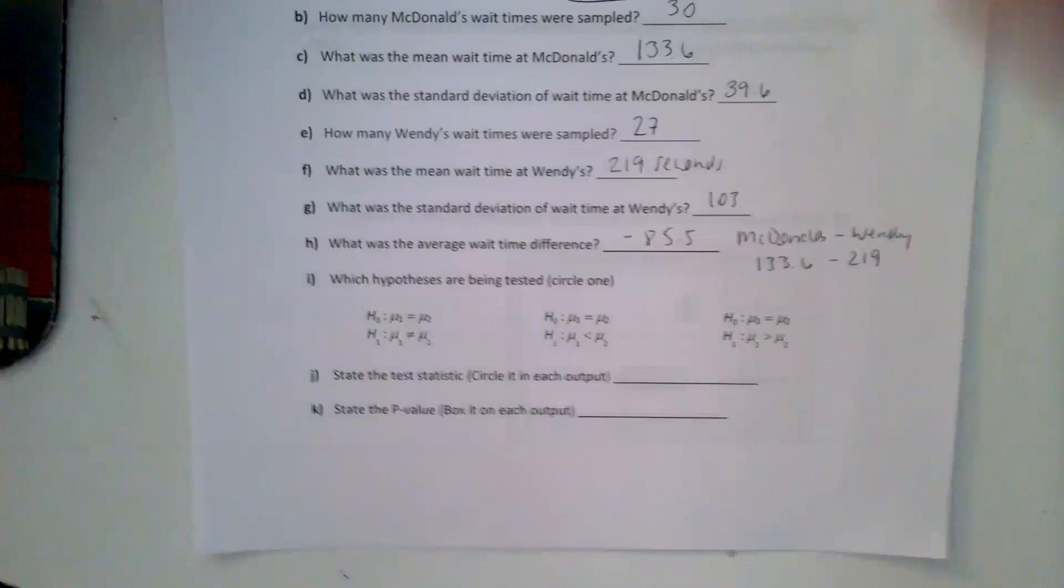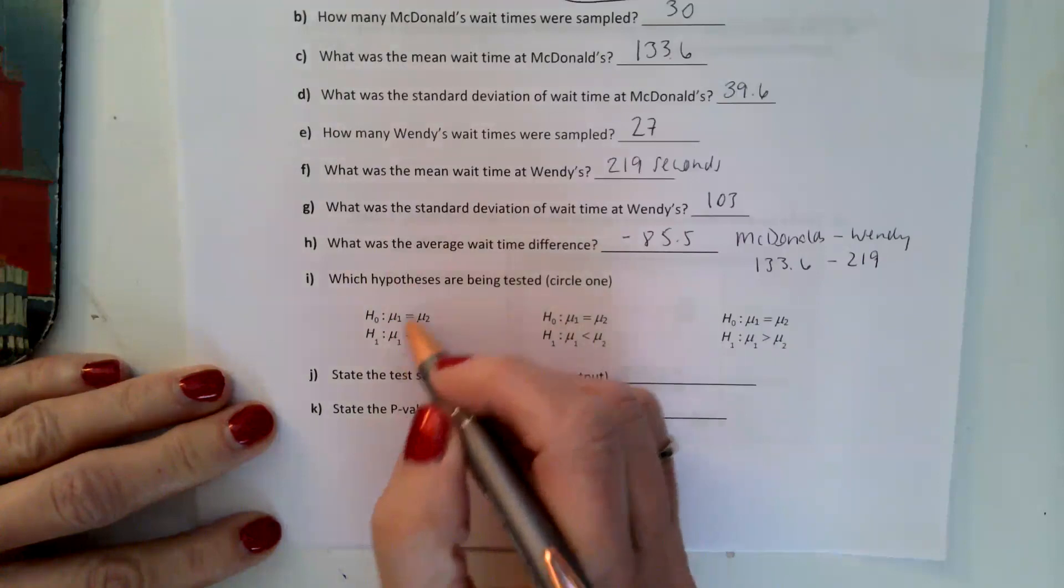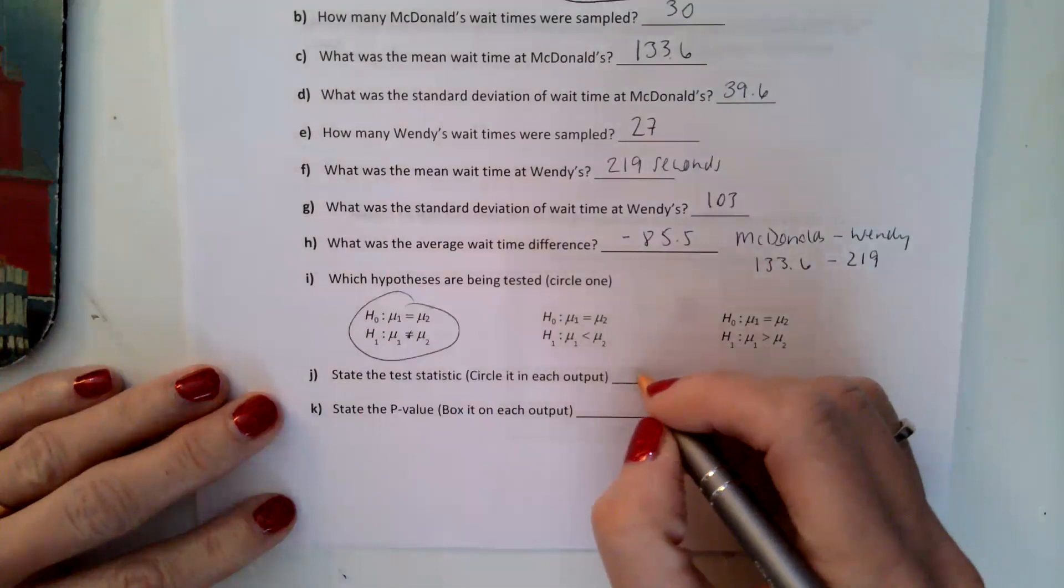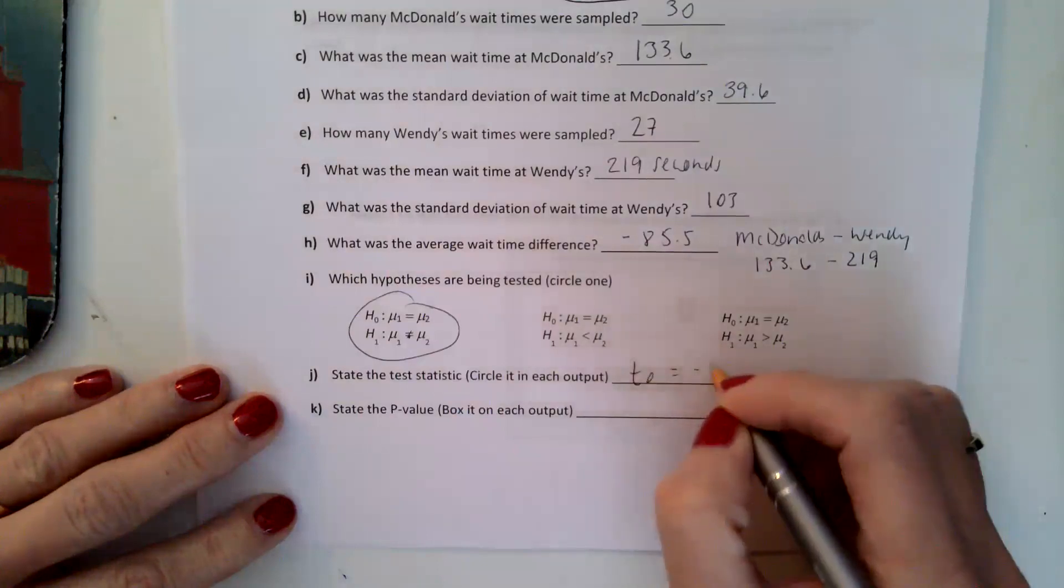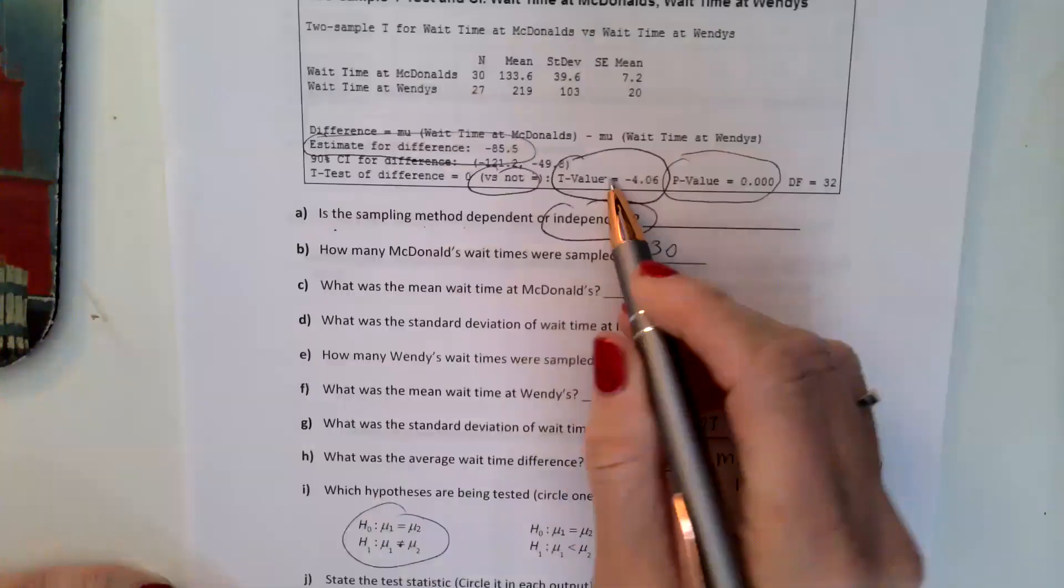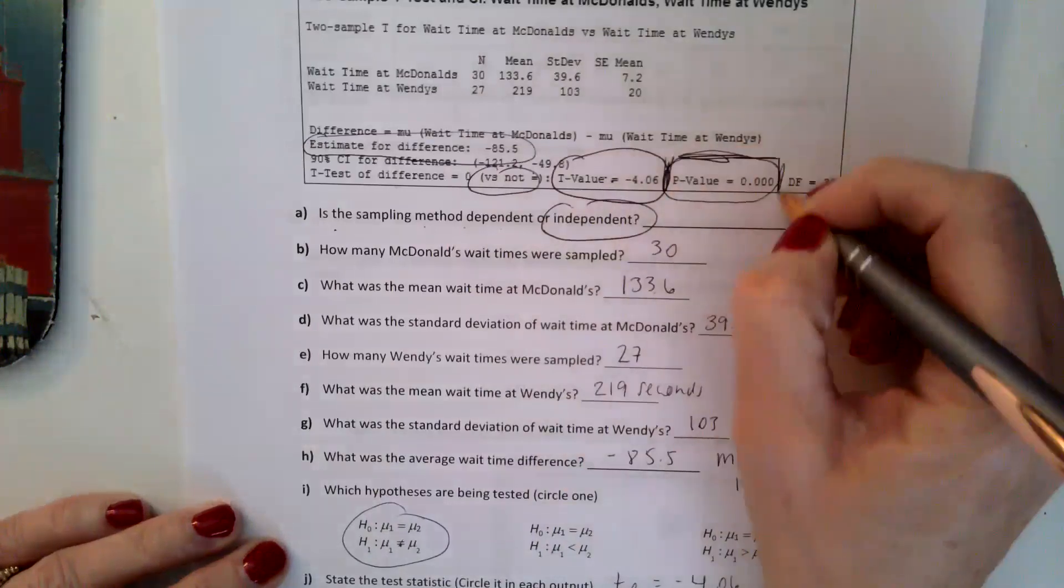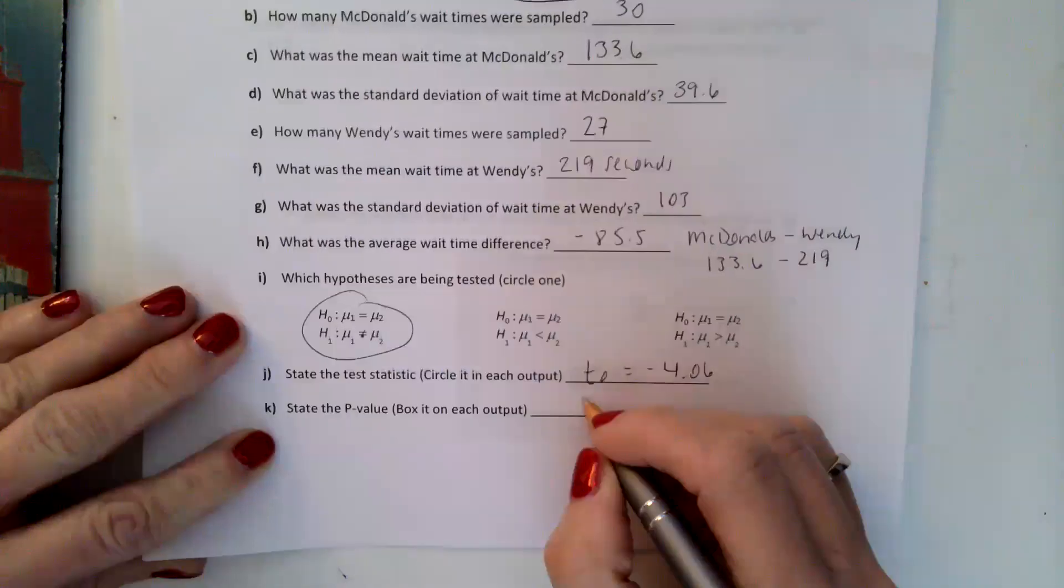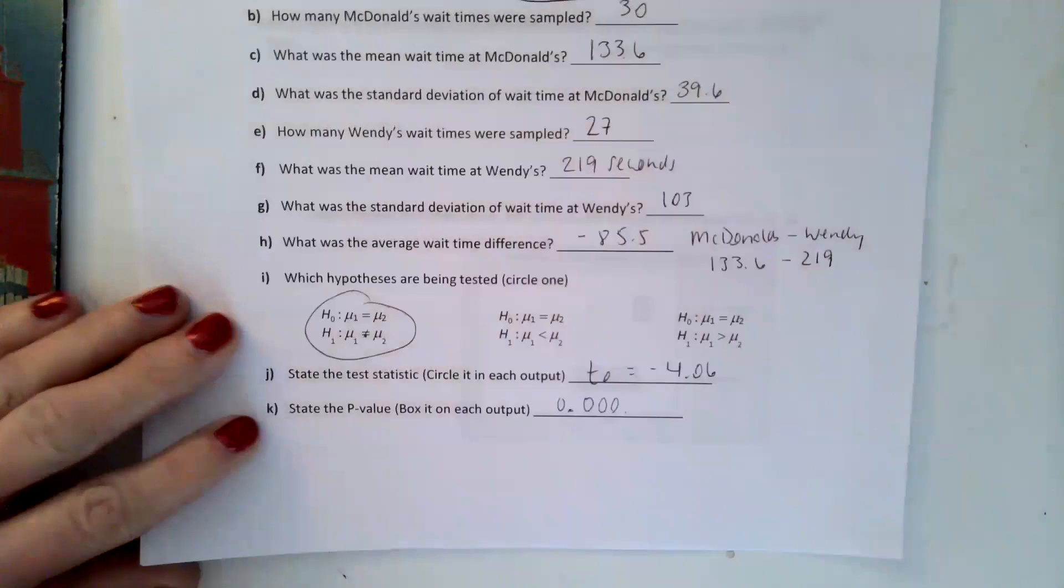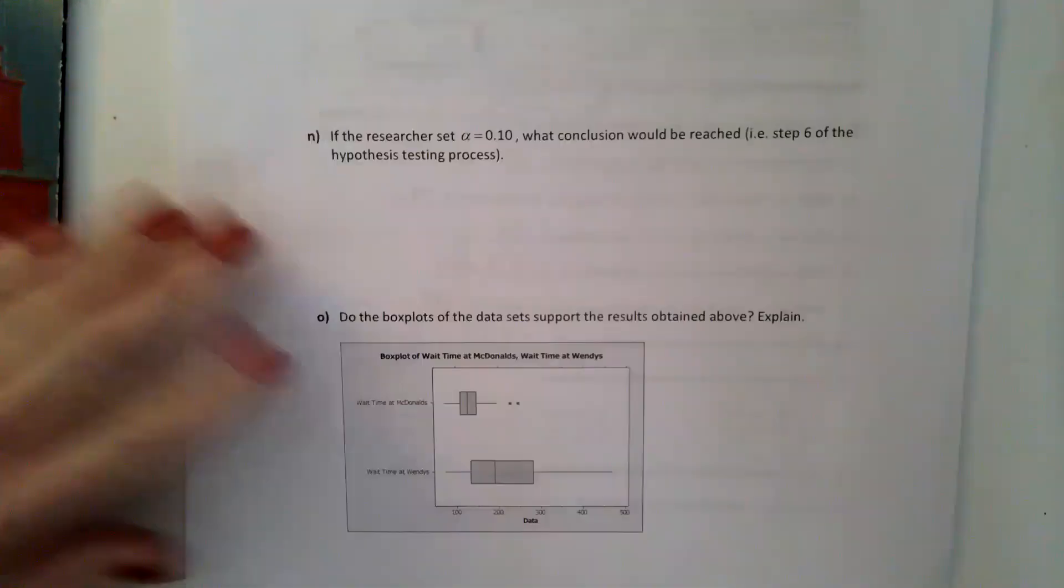Then I said, which hypotheses are being tested? And it's a not equal to, so it's this one here. State the test statistic and circle it. So the test statistic is the t₀, and that's the negative 4.06. I'm circling that. I circled it. State the p-value and box it. So I'm supposed to box that in, so we're going to put a rectangle around that. And that's the 0.000, so it's very, very small.